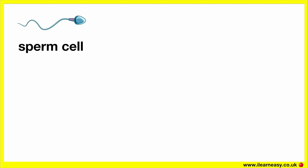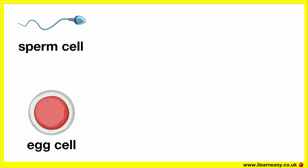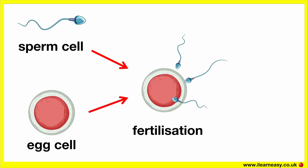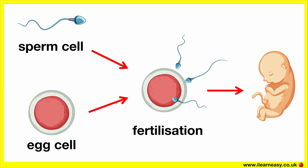This is a sperm cell. This is an egg cell. Fertilisation is the process in which the nucleus of a sperm cell fuses with the nucleus of an egg cell to produce a zygote. The zygote will eventually grow into offspring.